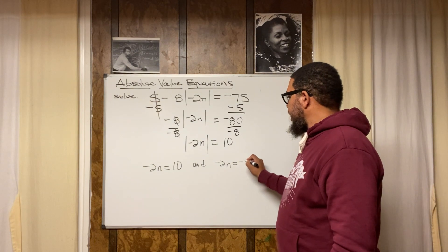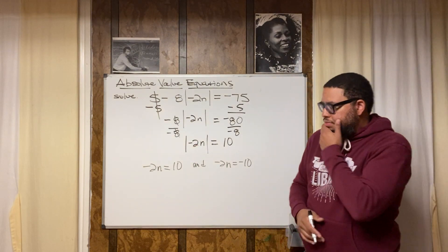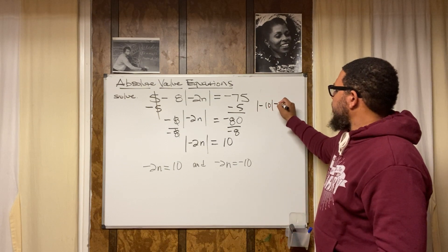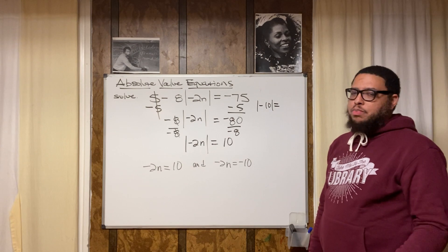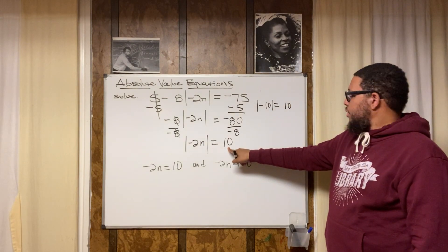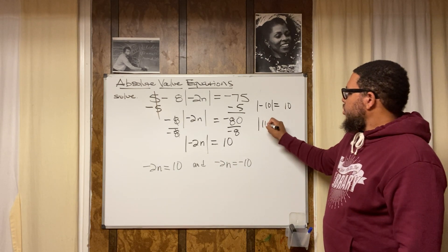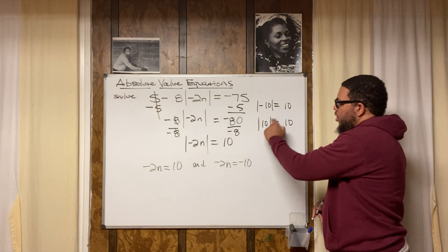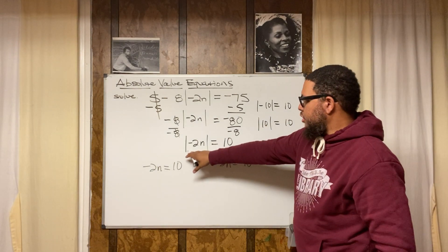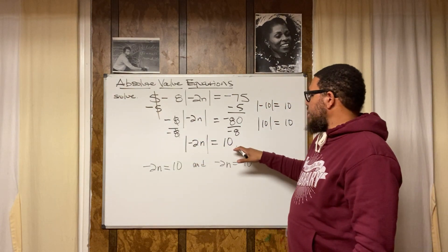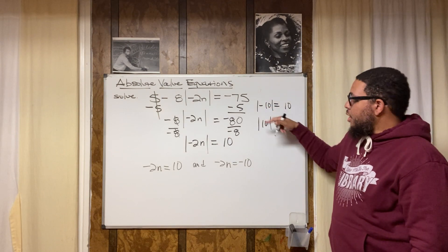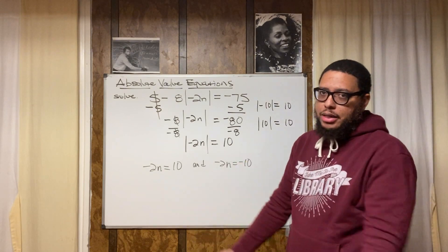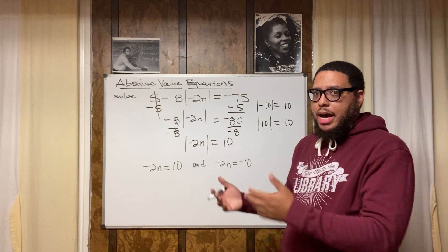Let me help you visualize this. If I asked you: what's the absolute value of negative 10? You'd say positive 10. And what's the absolute value of positive 10? Also 10. So both positive 10 and negative 10 have an absolute value of 10. That means whatever is inside the absolute value bars, if it equals 10, it could be either positive or negative 10. That's the why behind setting up two equations.